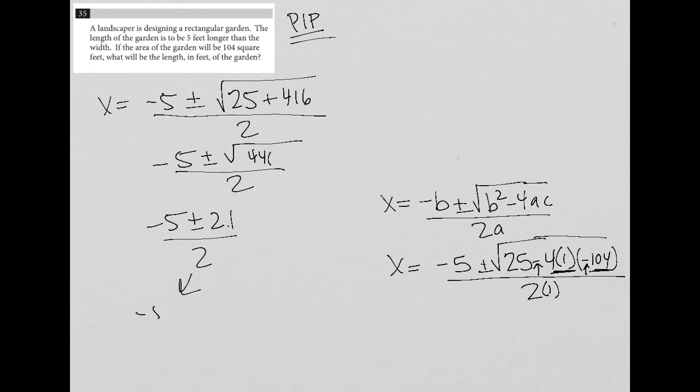So I have negative five plus or minus 21 all over 2, which means I have negative five minus 21 over 2, and negative five plus 21 divided by 2. I can't have a negative length, so that's gone. So negative five plus 21 is going to be 16 over 2 and equals 8. So I know that X is equal to 8,